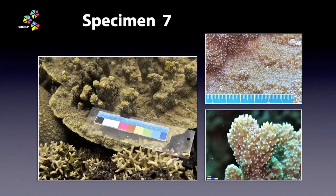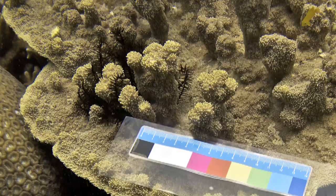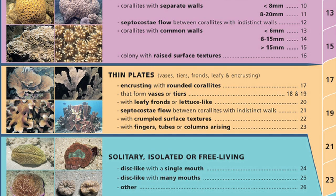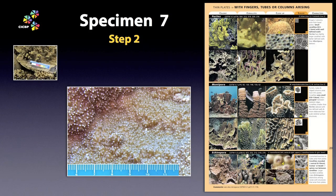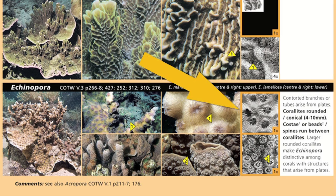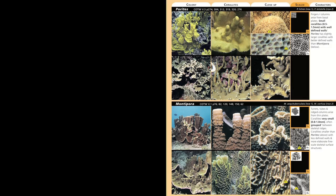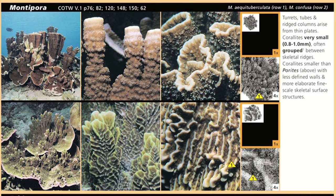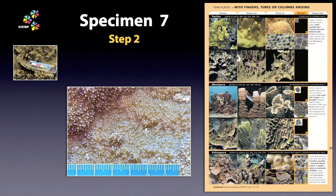Specimen 7. Here we have a coral made from thin plates with prominent upgrowths. Going for thin plates with fingers, tubes, and columns arising — that's lookalike page 23. The coralites are very small, about 1mm across, set among a sea of fine skeletal structures. By checking the true scale boxes, we ignore Echinopora as its coralites are too large. Porites and Montipora are the correct scale. Close inspection of the Montipora skeleton shows complex bristles and ridges on the colony surface. There are a lot of Montipora species, so here's another one to add to your mental search image of this genus.